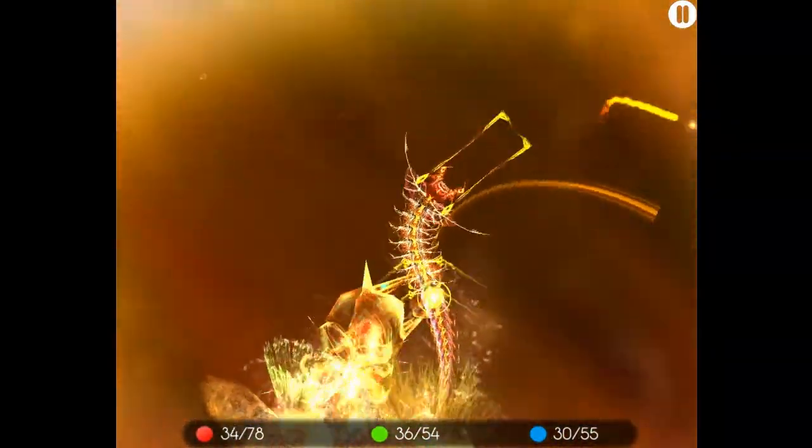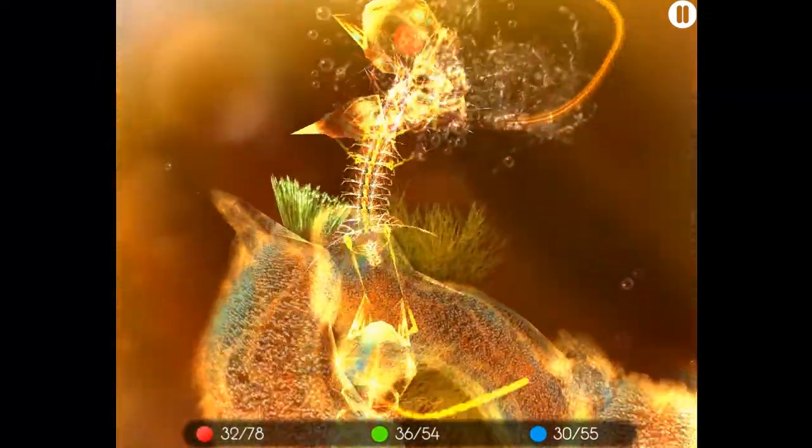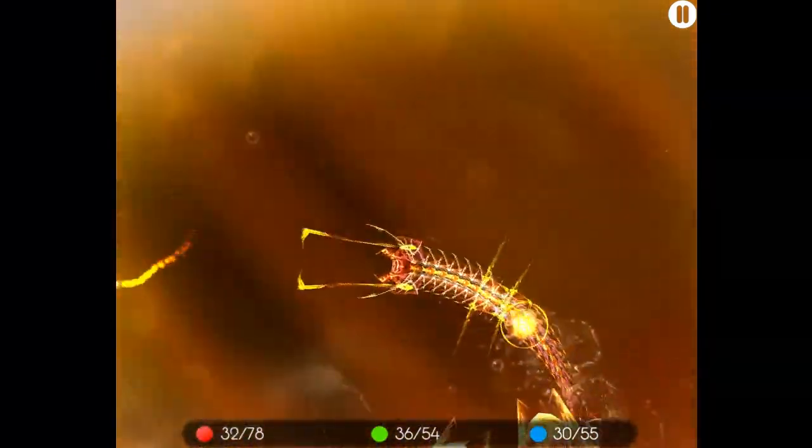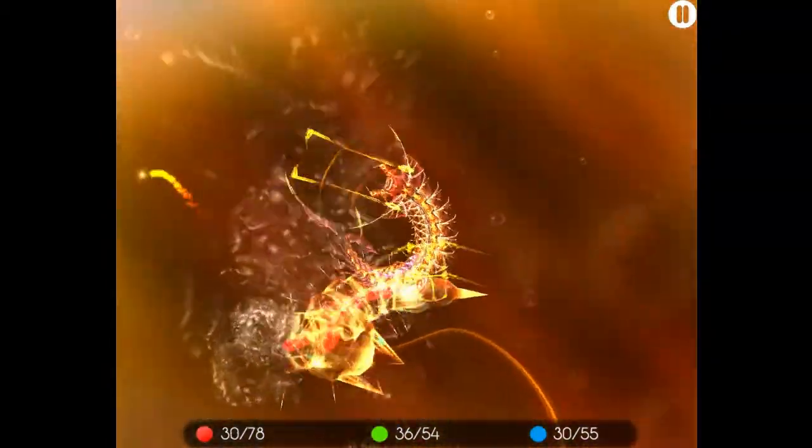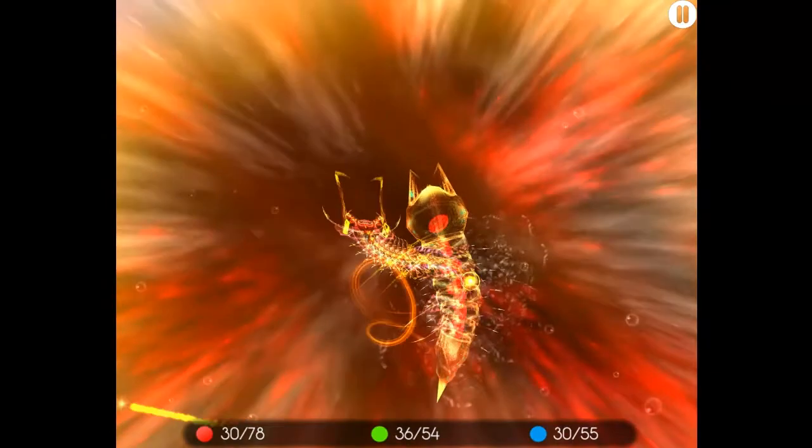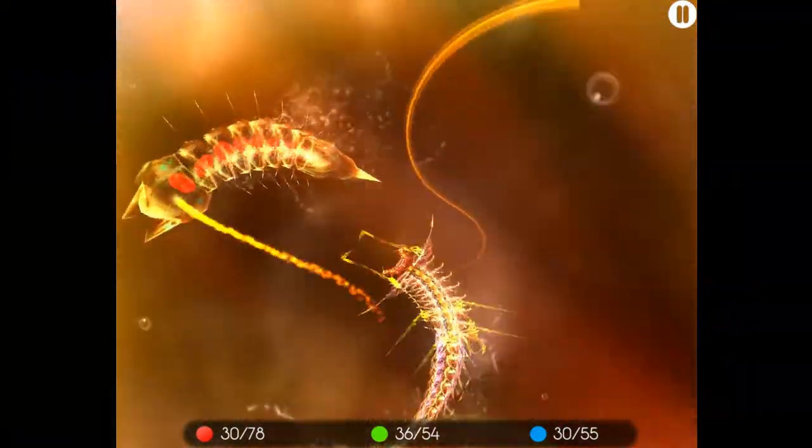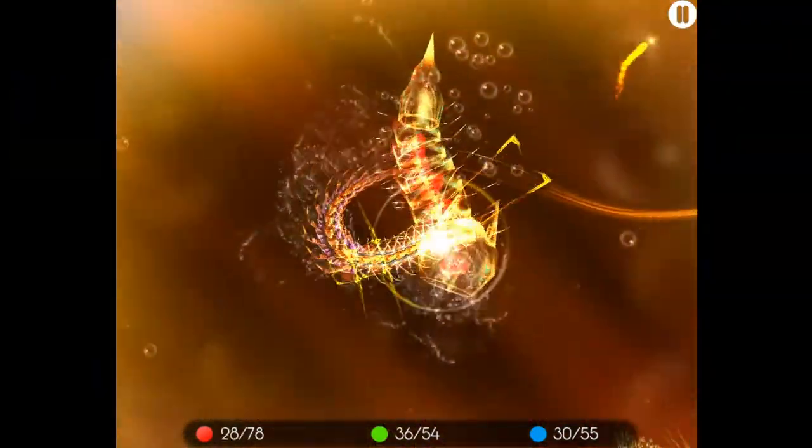On va essayer. Il m'a fait un dégât. On va essayer de se le bouffer en entier. Là, je récupère les orbes rouges qui sont dans son corps. Et ensuite, sa tête, et je l'ai tué. On va essayer de se faire le deuxième aussi. Au moins, c'est fait. Vous voyez vraiment les deux petits aspects du jeu.